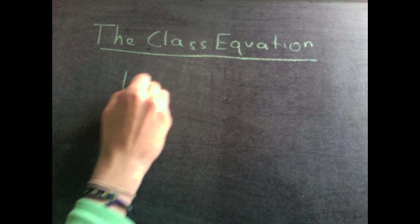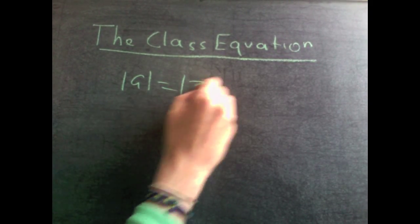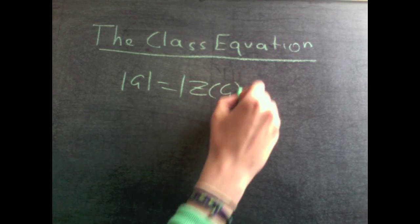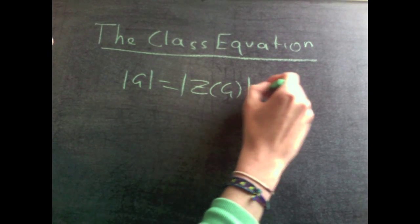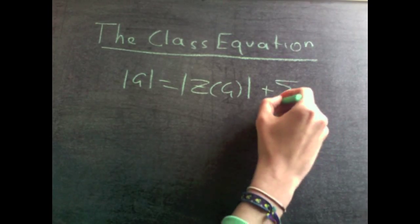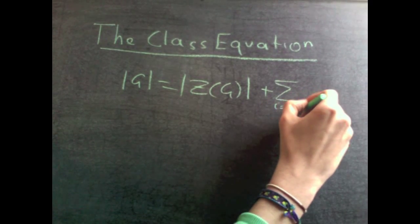The class equation is the size of g is equal to the size of the center of g, plus the sum. You can see this written in different ways.